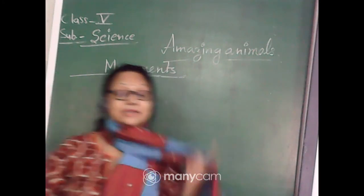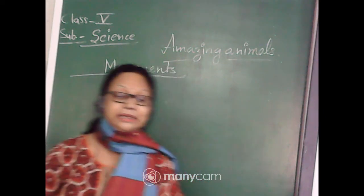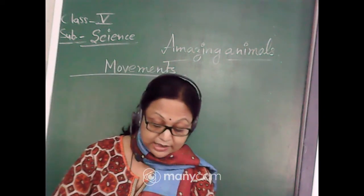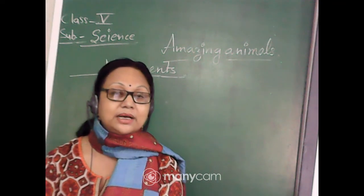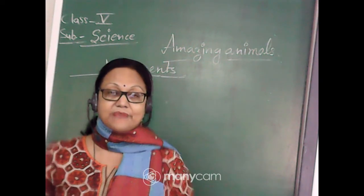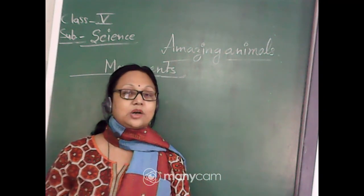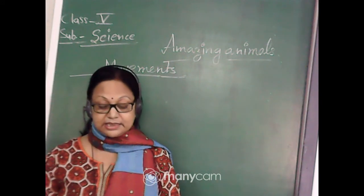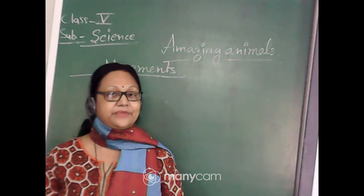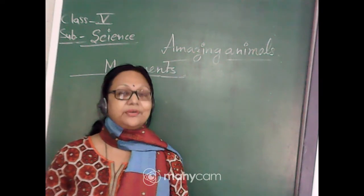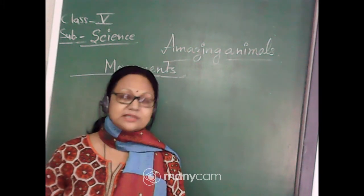Welcome, Class 5. In your science class we are doing amazing animals and breathing organs. We have already discussed breathing organs: amoeba and paramecia are single-celled animals that do respiration through their body surface. Insects have special spiracles and a channel of tubes called breathing tubes. Aquatic animals have gills to breathe, and amphibians, who live in water as well as on land, have two types of respiratory systems — moist skin for breathing in water, as well as lungs.